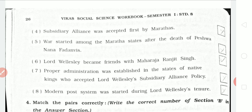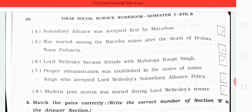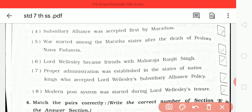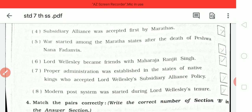Fifth number: the war started among Maratha states after the death of Peshwa Nana Fadnavis — this is correct. Sixth number: Lord Wellesley became a friend with Maharaja Ranjit Singh — this is correct. Seventh number: proper administration was established in the states of native kings who accepted Lord Wellesley's Subsidiary Alliance system.